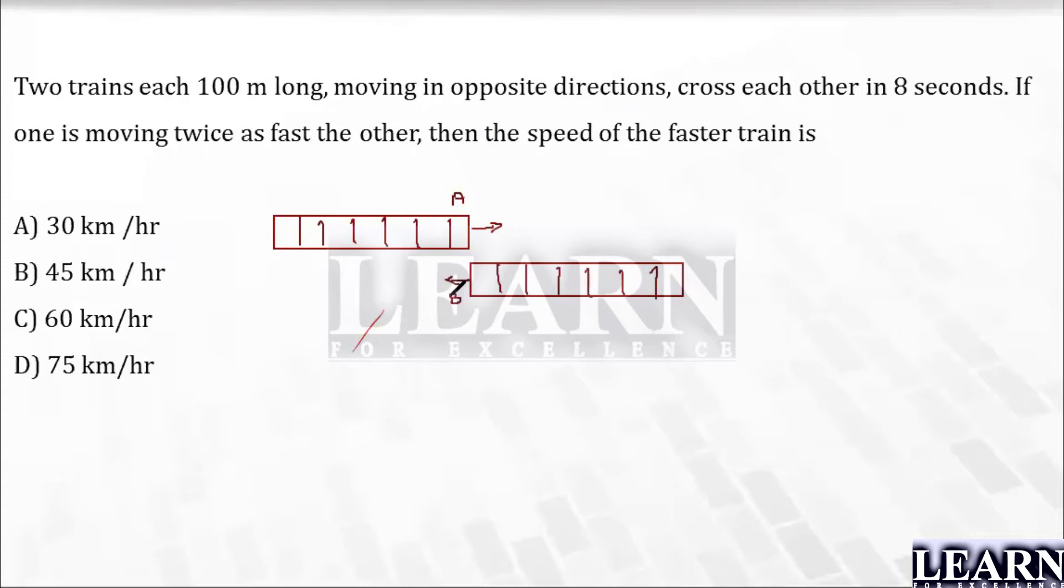Now look here. If this is a train, and let us assume this is standing here, not moving, and if train A is traveling till here, can I say it has crossed train B? No, right? It is just adjacent to train B but it has not crossed.